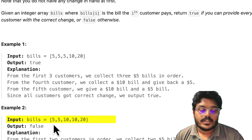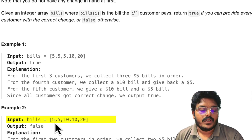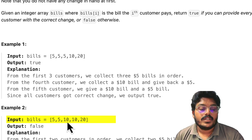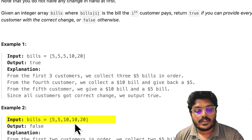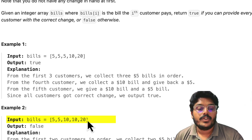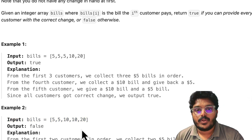Let's take the second example: 5, 5, 10, 10, 20. We start with zero again. The first $5 gives us one lemonade and we hold one five. The second $5 gives us two fives. The third bill is $10, so we return $5 — now we have one five and one ten. The fourth is also $10, so we return the last $5 — now we have two tens but no fives. When the $20 comes, we have no $5 to make $15 change, so we cannot process that customer and must return false.